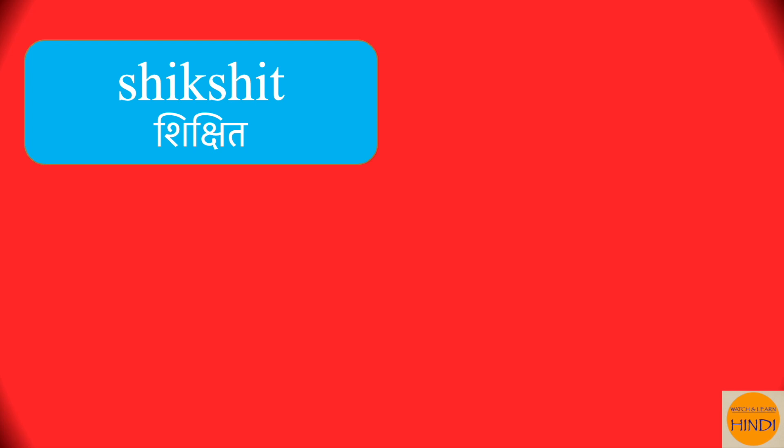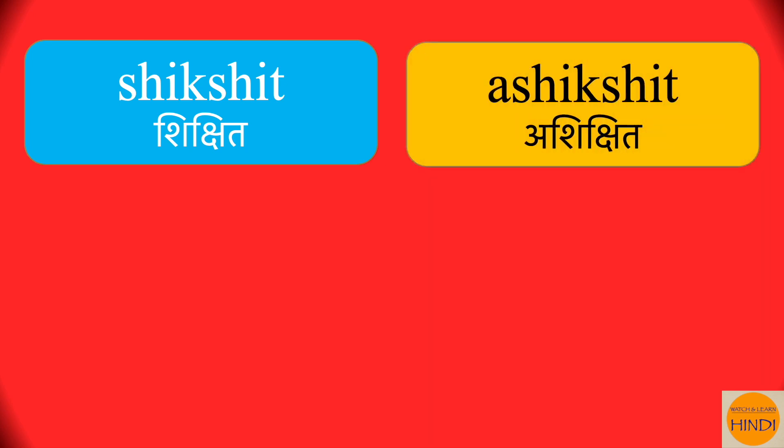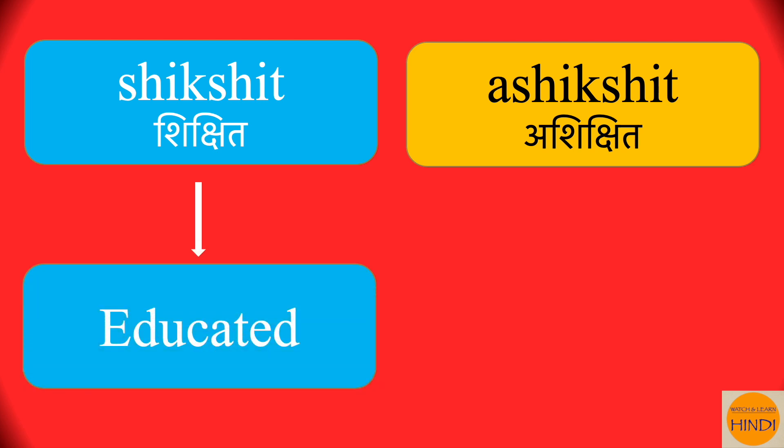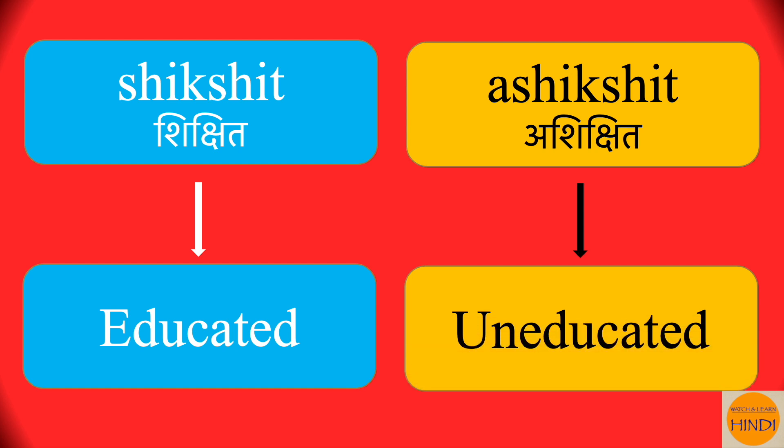The second word is shikshith. Again, if you add 'A' in front of it, it becomes ashikshith. Shikshith is educated, so ashikshith is uneducated.